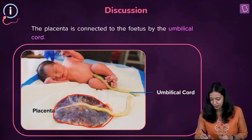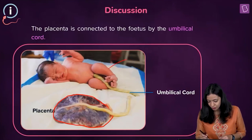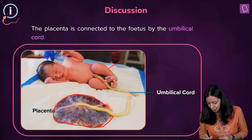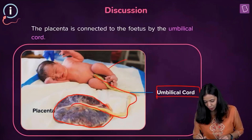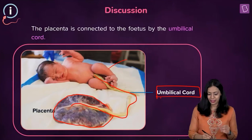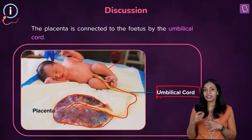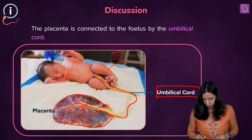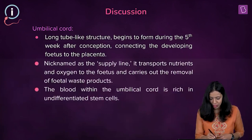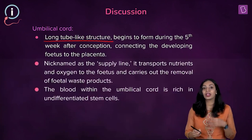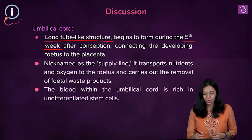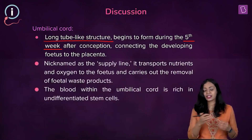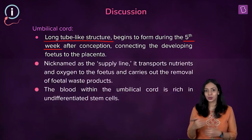There is a connection that exists between the fetus and the placenta and that is known as the umbilical cord. The placenta is connected to the fetus by the umbilical cord. It is a long tube-like structure that begins to form during the fifth week after conception and connects the developing fetus to the placenta.